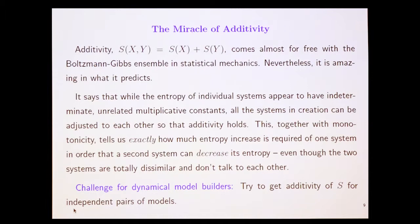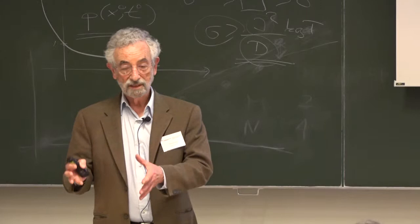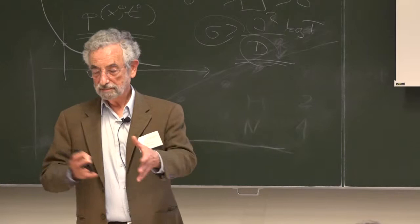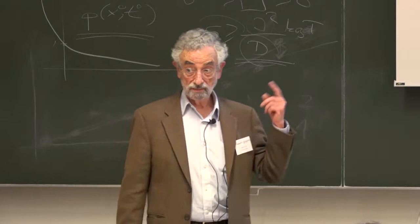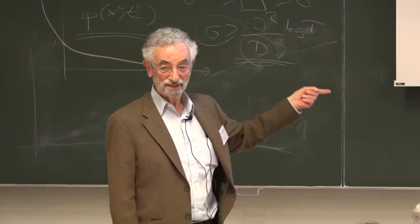So this additivity, together with monotonicity, that is entropy increases if and only if you can go from A to B or X to Y, tells us exactly how much entropy increase is required of one system in order that a second system can decrease its entropy, even though those two systems are totally dissimilar and don't talk to each other. So let me repeat that. The whole of mechanics, the turbine that we had before, is based on the fact that while entropy has to go up for an individual system by the gorilla, by anything you do to it, the entropy will go up. But I would like it to go down. And I can get it to go down by taking a partner, and the partner has entropy that goes way up, so this guy can go down. And that's why the turbine works.